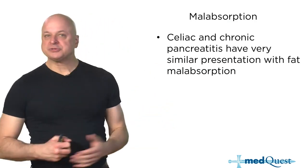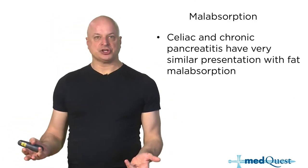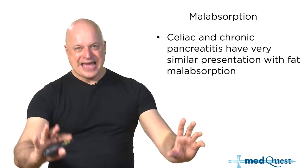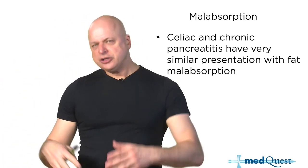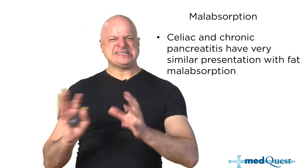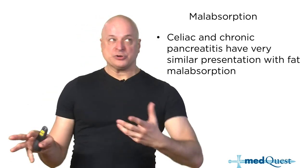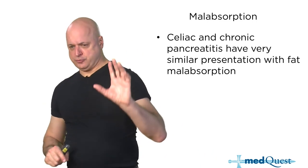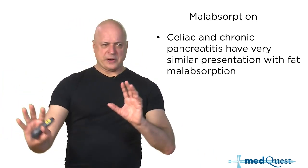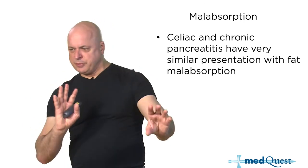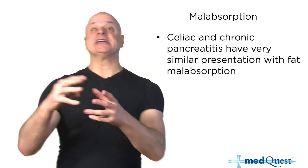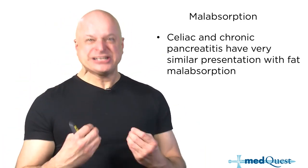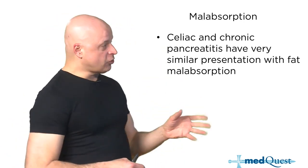Malabsorption diarrheas include celiac disease, sometimes known as gluten-sensitive enteropathy — that is IgA attacking your bowel wall with the antigen to gluten. Gluten is a fancy word for wheat. It's like a hapten mechanism: you need the wheat/gluten antigen, and then it attacks your bowel. Your entire small bowel from duodenum all the way to your ileocecal valve is affected.